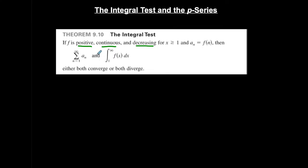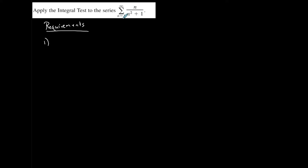Let's look at this example and apply the integral test. First, let's determine if this series meets the requirements. The first requirement is that it should be positive. Is this always positive for n greater than or equal to 1? If I plug in 1 or anything bigger, the numerator is positive and the denominator is also always positive, which means the expression is always positive. So the first requirement is met.